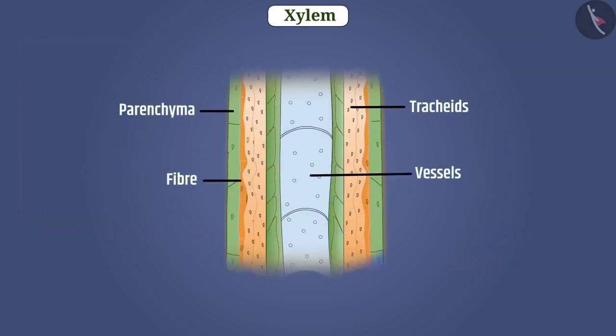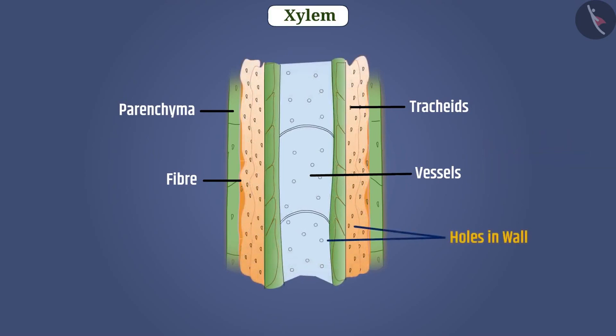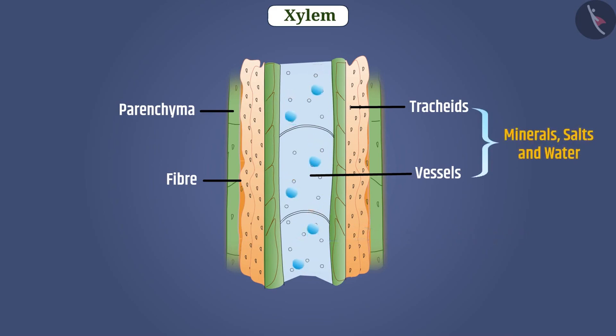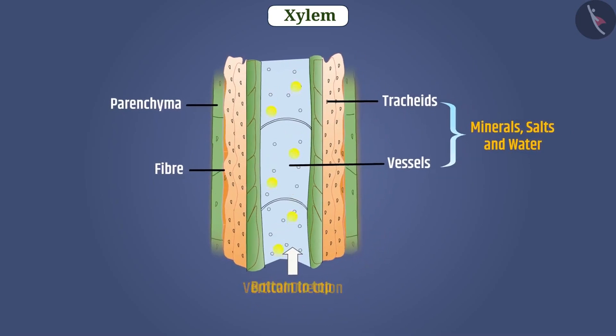The structure of tracheids and vessels is tubular. Their cell wall contains lignin, so their wall is thick as well as there are holes in their walls. These are connected vertically to each other like a perforated pipe. Through these, the minerals, salts, and water are transported in vertical direction from bottom to top.